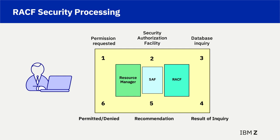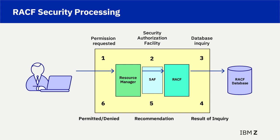Using the diagram: one, the user requests permission to submit JCL; two, the request to submit is passed along to SAF; three, SAF follows through with a RACF database inquiry; four, the result of the inquiry to submit is passed back to SAF; five, SAF passes the result of the inquiry to the resource manager; and six, the resource manager is responsible for honoring the security manager's permitted or denied recommendation for the individual user to submit JCL.